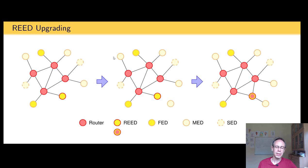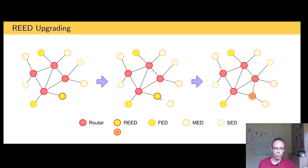A REED is a quite interesting device in a Thread network — it can either take the role of a router or a full end device. For example, if a new end device wants to join the network and can only reach a REED but not the other routers, the REED can be upgraded to a router so the end device can connect. The REED then becomes a router and the parent of that new minimal end device. You might ask: why not always be a router?